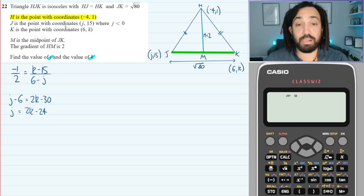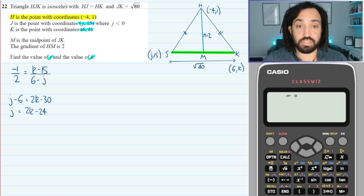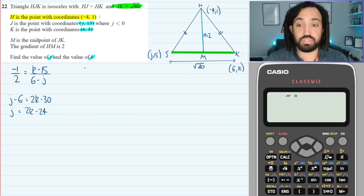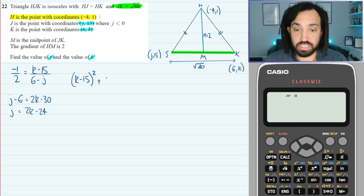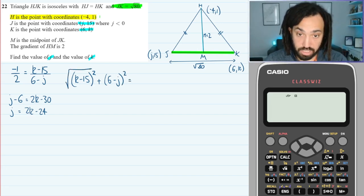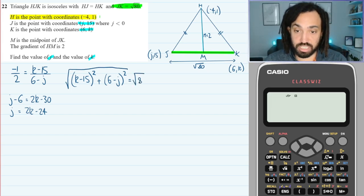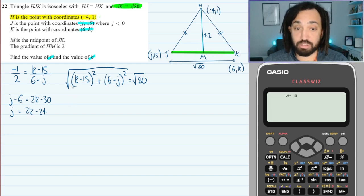So what we need to do is find a second equation. I've used the gradient information — what I haven't used is the fact that the distance here is root 80. So let's use the distance formula. The distance formula tells us that the square root of the change in Y squared plus the change in X squared equals the length of the line segment. So: the square root of (K minus 15) squared plus (6 minus J) squared equals root 80. We can solve this by first squaring both sides to remove the square roots.